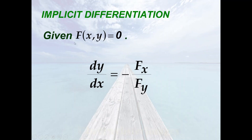Notice that in f(x, y) = 0, the right-hand side is 0, so we have to write the given equation in this form. We use the chain rule to derive this equation — if f is differentiable, we apply the chain rule to differentiate both sides of f(x, y) = 0 with respect to x.